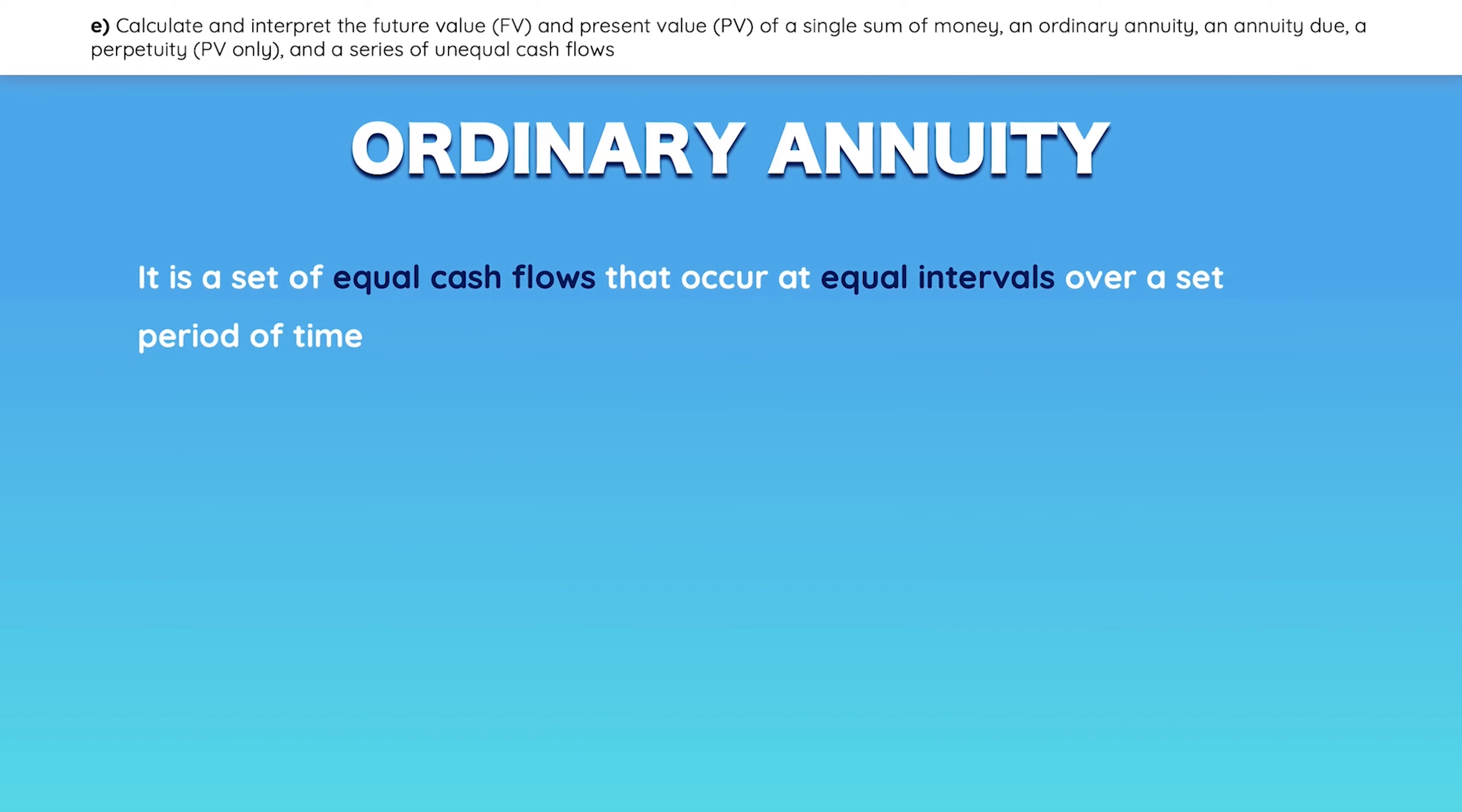Now let's cover annuities. Annuities are basically a set of equal cash flows that occur at equal intervals over a set period of time. Let's look at them in practice.